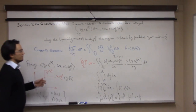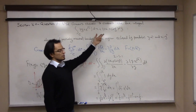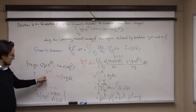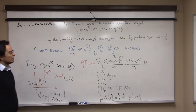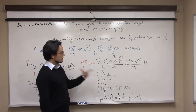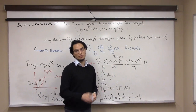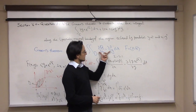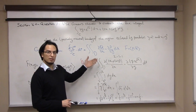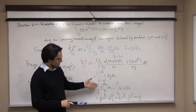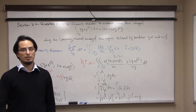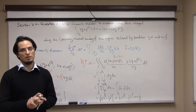To wrap up: we had a line integral over a closed, simple, positively oriented curve, so we applied Green's theorem to convert it to a double integral over the region inside. The integrand turned out to be 1, and after setting up the iterated integral and evaluating it, the final answer is one-third. Thank you for watching, and see you in other videos.